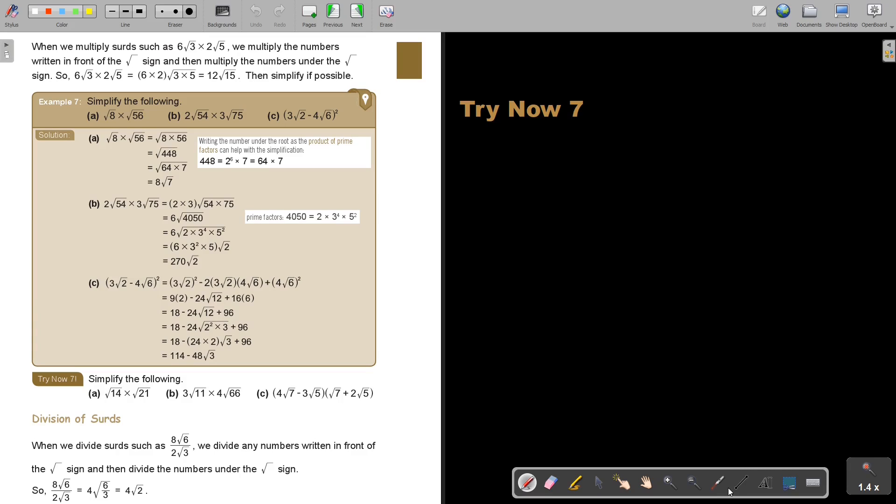Let's look at a few examples. So if you do this one first multiply the numbers and then you see if it can, so it's 64 times 7, otherwise use your prime factor and it's 8 square root 7.